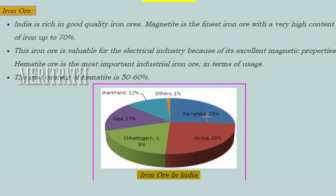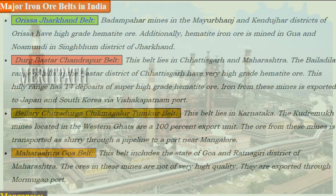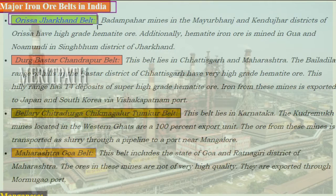Percentage of iron ore in India by state: Karnataka has the highest at 26 percent, followed by Odisha at 25 percent, Chhattisgarh 9 percent, Goa 17 percent, Jharkhand 12 percent, and other states 1 percent. Now let us learn about the major iron ore belts in India, beginning with the Orissa-Jharkhand belt.